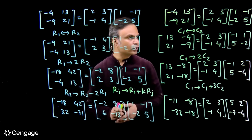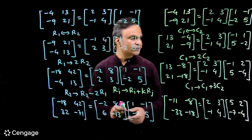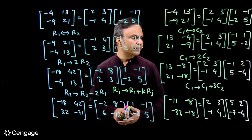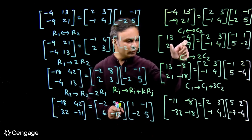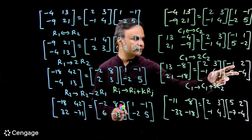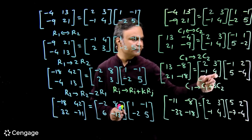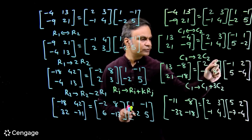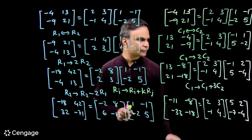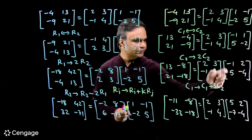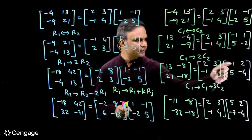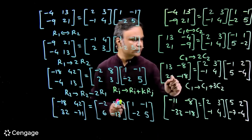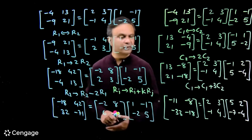Now we do one more column transformation: column 2 changes to 2 times column 2 — we are multiplying elements of column 2 by 2. On the LHS we have this new matrix, and on the RHS the first matrix is the same while this matrix transforms with C2 → 2C2. We get: minus 2 plus 15 = 13, 4, minus 12, minus 8, 1 plus 20 = 21, minus 2, minus 16, minus 18.